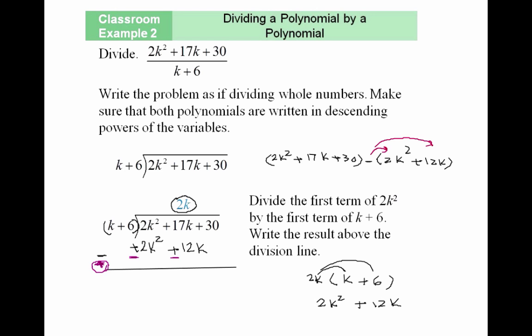See how 2k² becomes -2k² and 12k becomes -12k when I distribute the minus. I'm changing the subtraction to addition and changing the sign of each term to its opposite. This becomes minus, this becomes minus. So now we're adding these two.